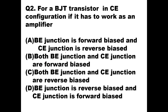Question number two: for a BJT transistor in common emitter configuration, for it to work as an amplifier, the BJT should be in active mode. For active mode, the first junction should be forward biased and the second junction should be reverse biased. In common emitter configuration, the base-emitter junction should be forward biased and the collector-emitter junction should be reverse biased. Option A is the right answer.